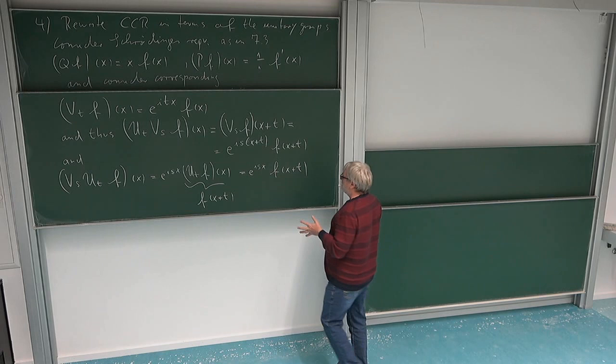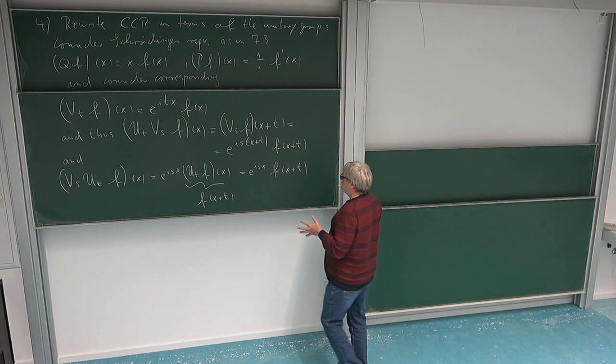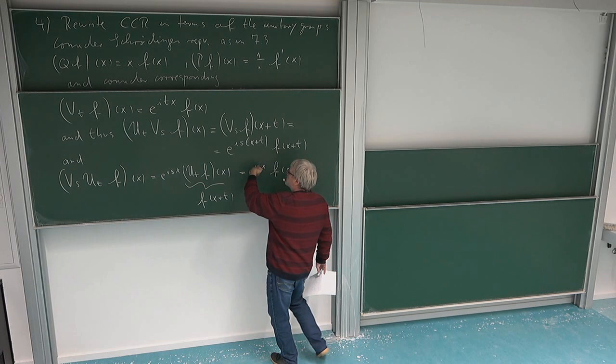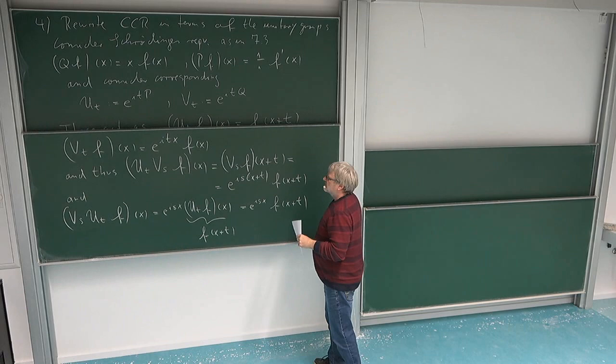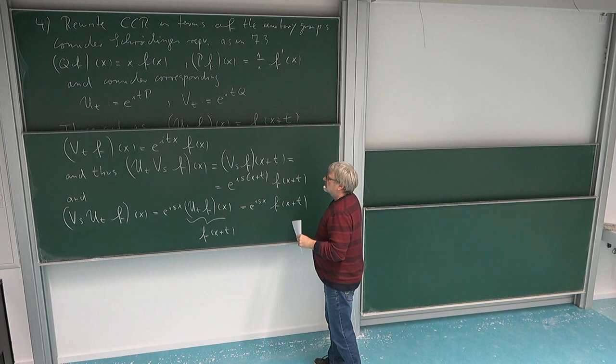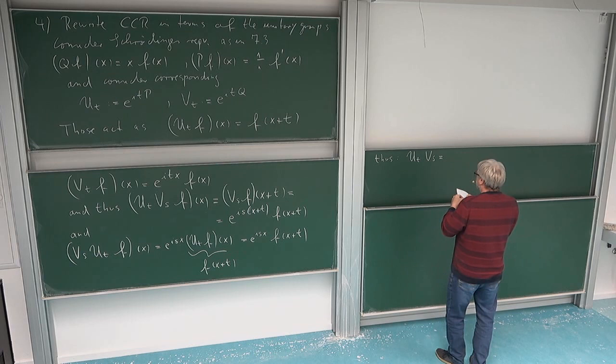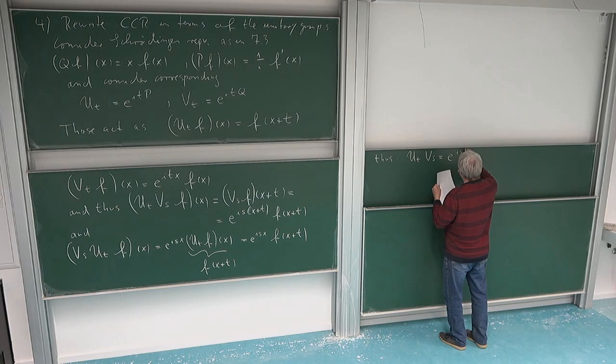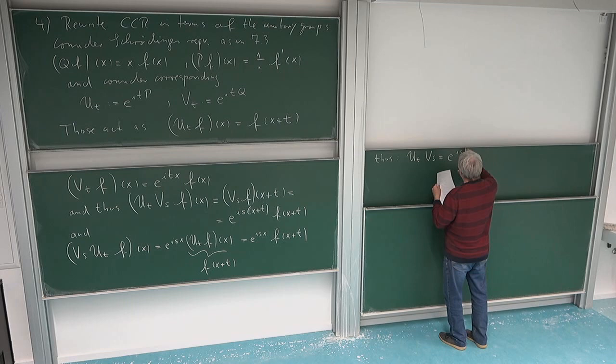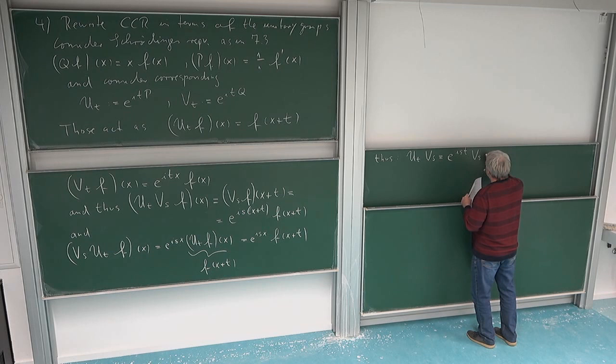The results are not far apart: in both cases we get the same shift, but the multiplication factor differs. In U_t V_s the phase contains e^{isX} · e^{isT}, while in V_s U_t we only have e^{isX}. So the relation between U_t V_s and V_s U_t is just a factor e^{iST}, which does not depend on X — it's just a constant. Therefore: U_t · V_s = e^{iST} · V_s · U_t. This is the version of the CCR expressed in terms of the unitary groups.